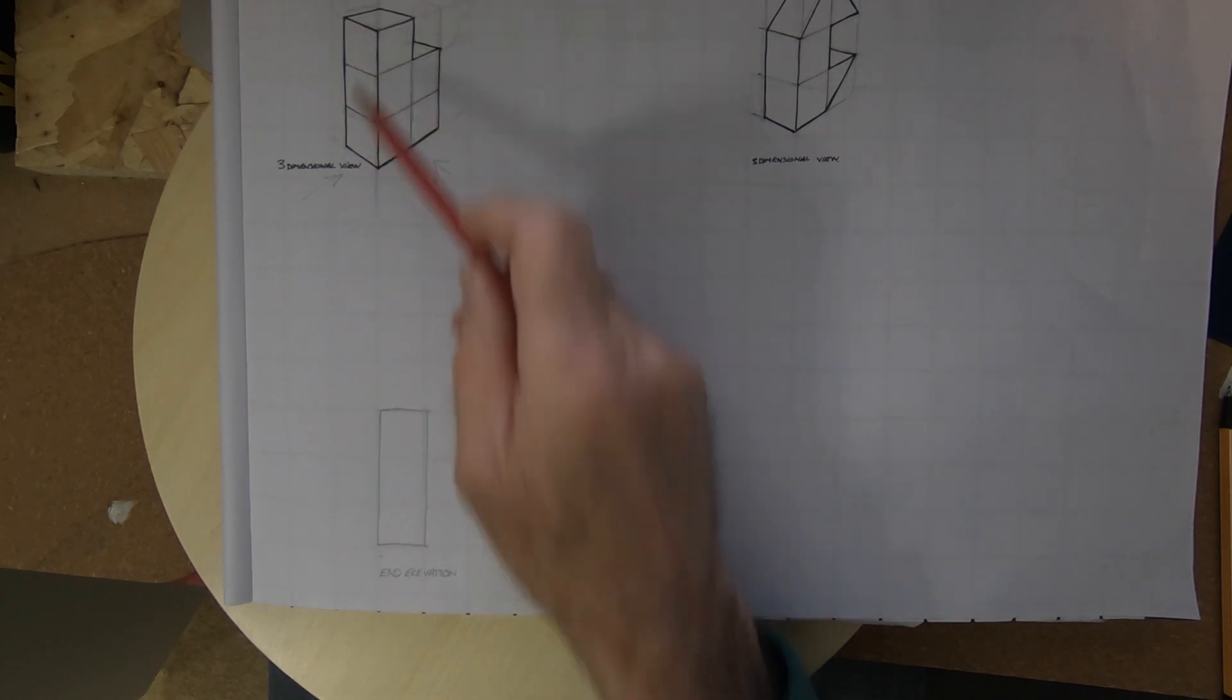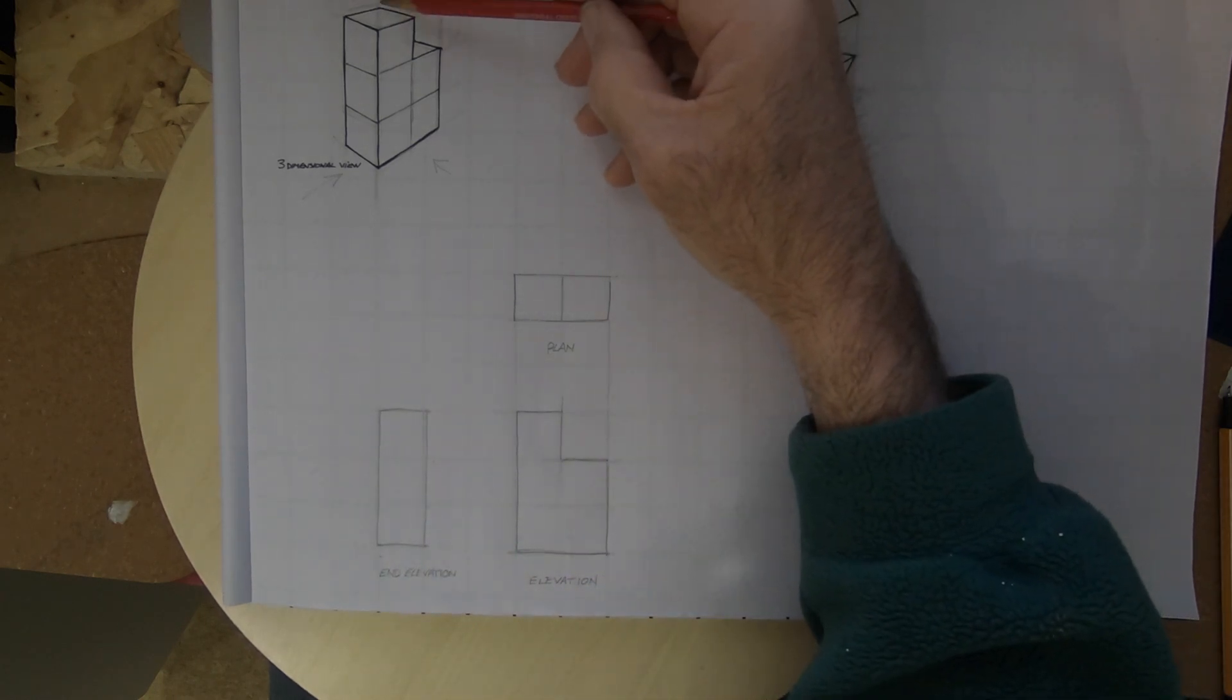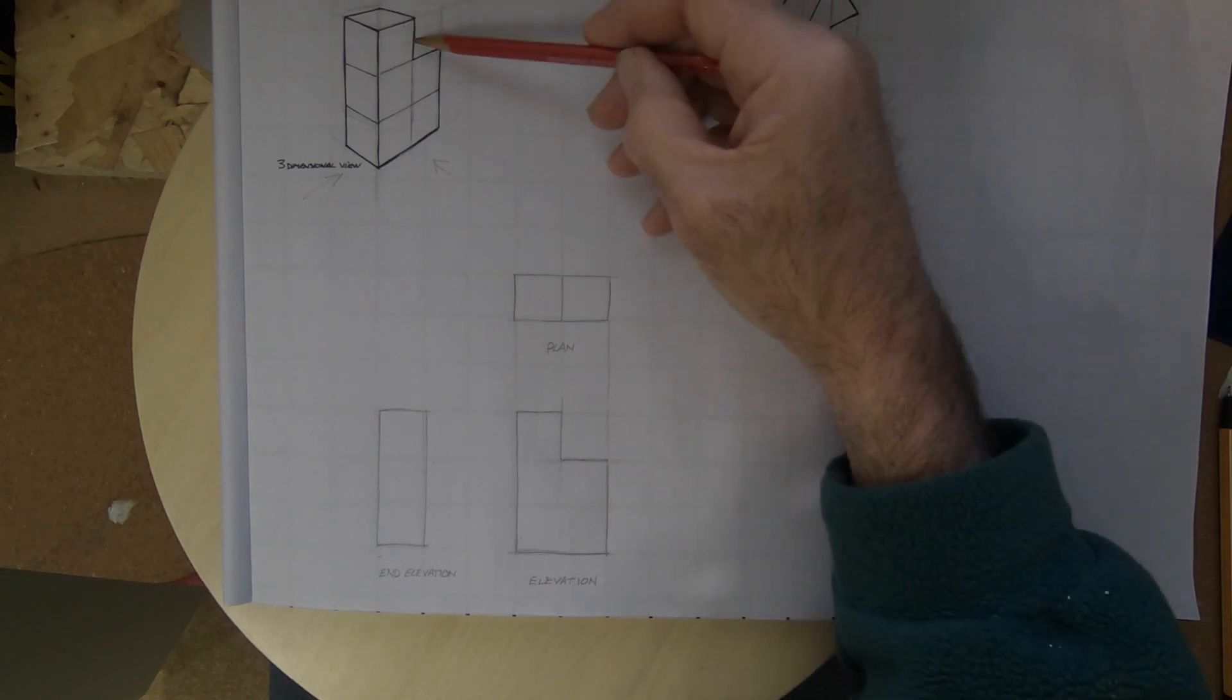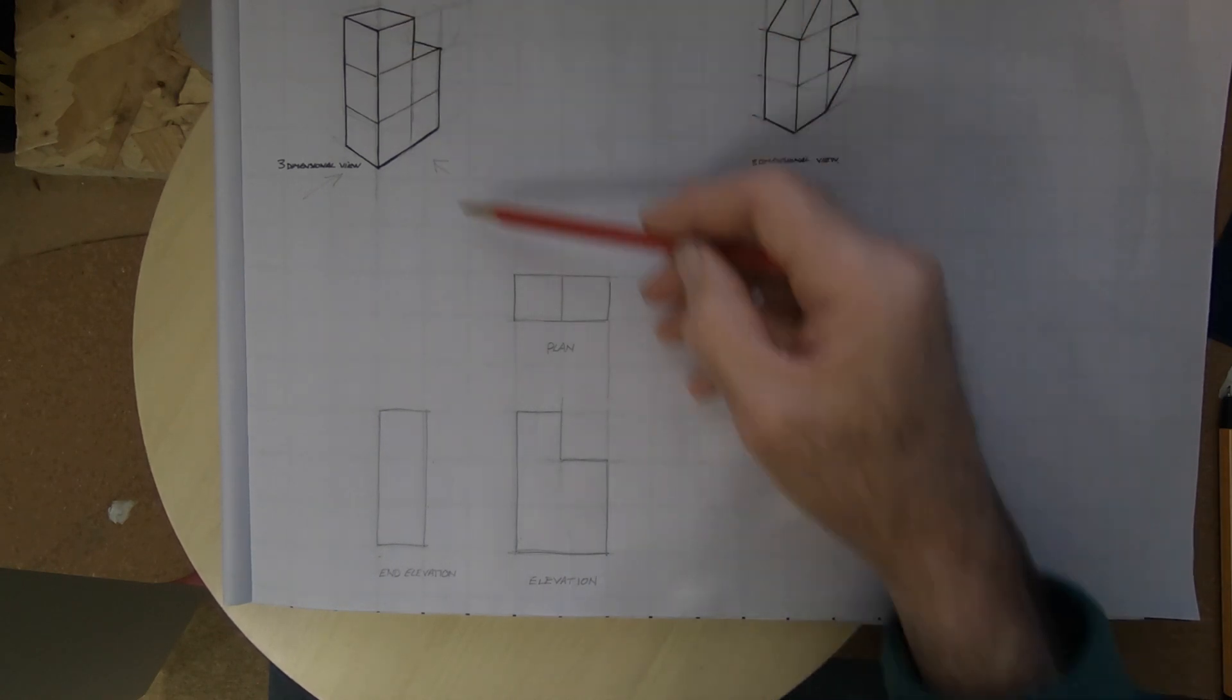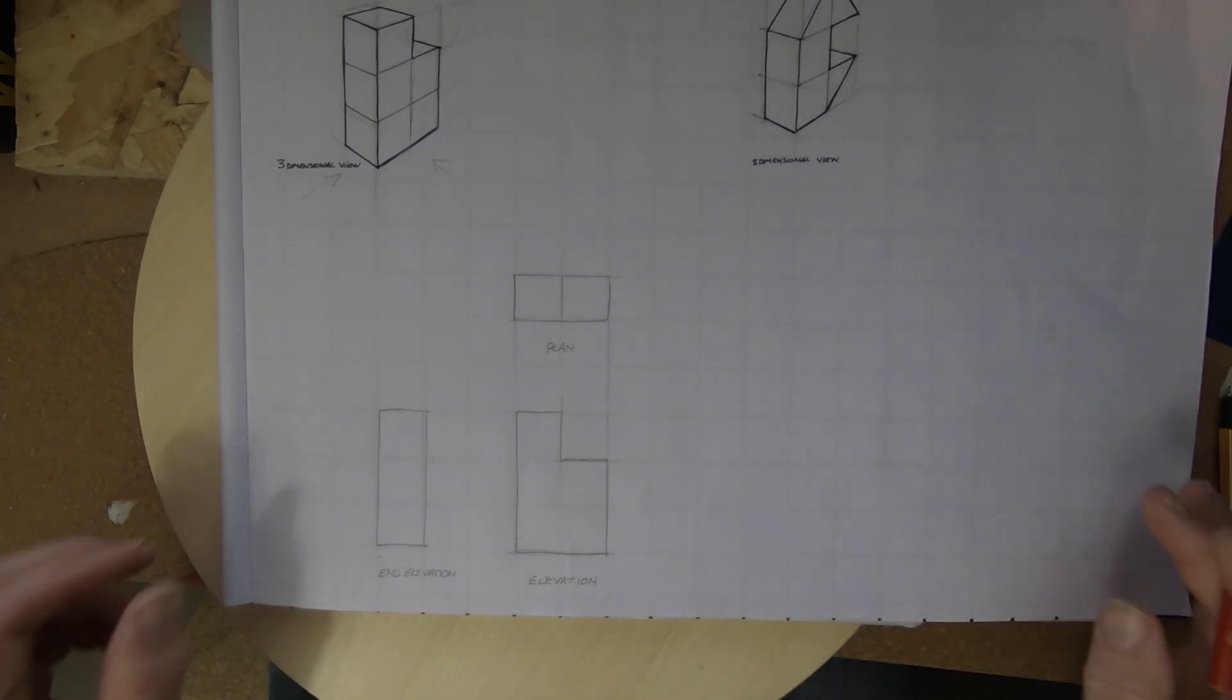Later on we'll show you some hidden detail we could add to a drawing like that, but just for the moment that's a straightforward outside left hand view. And for the top we've got that stepping down but we can't see the stepping down because we're looking straight above. We can get that information from the end, from the main elevation.